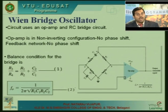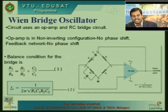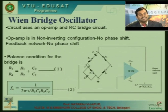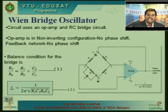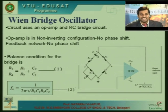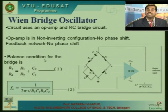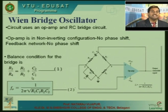Since the op-amp introduces 0 degrees phase shift, the feedback network must also not introduce any phase shift. We use an RC bridge called the Wien bridge, which consists of a series arm and a parallel arm of RC networks — a lead network and a lag network. At a particular condition, the bridge will be balanced, and at balance the phase shift introduced will be 0. The balancing condition is: R3/R4 = R1/R2 + C2/C1.